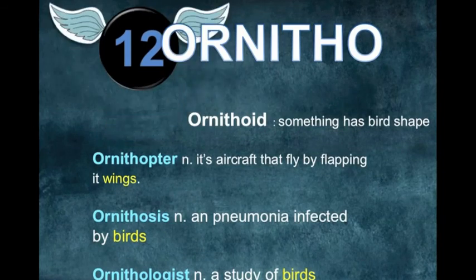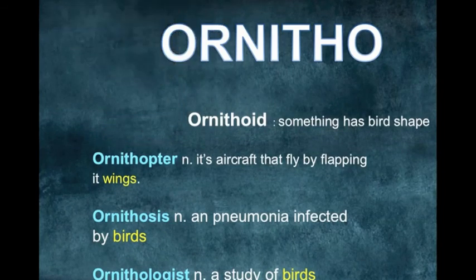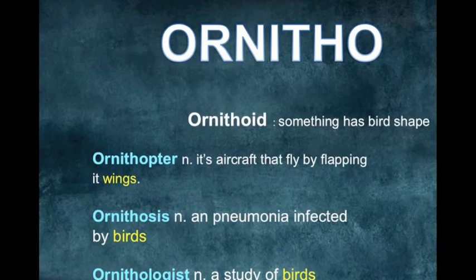Number twelve has roots referring to birds and wings: ornitho. Ornithopter is an aircraft that flies by flapping its wings. Ornithosis is a pneumonia sickness caused by birds. Ornithologist is one who studies birds. Ornithoid is a thing that has a bird shape.